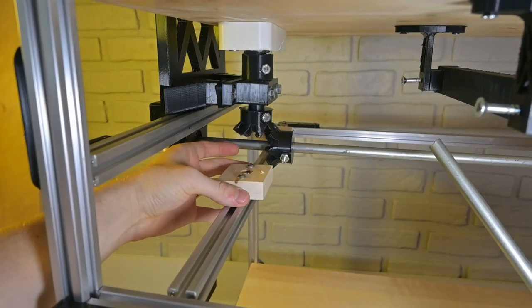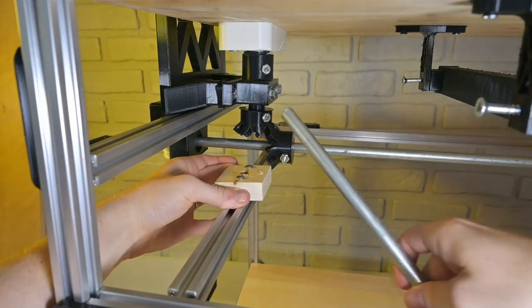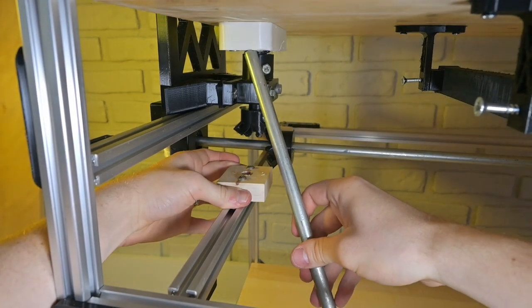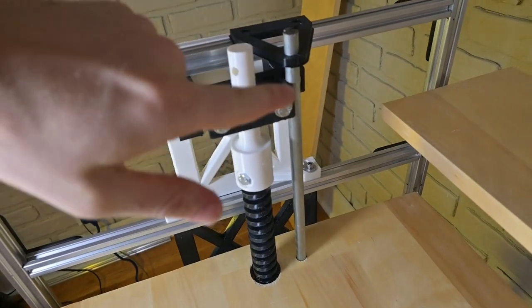I'm also planning on adding a guide support rod to the side of it which will run parallel to the acme threaded rod for extra support. This will provide stability and will prevent any wobbling or offset as the top board is moving up and down on the acme rod.